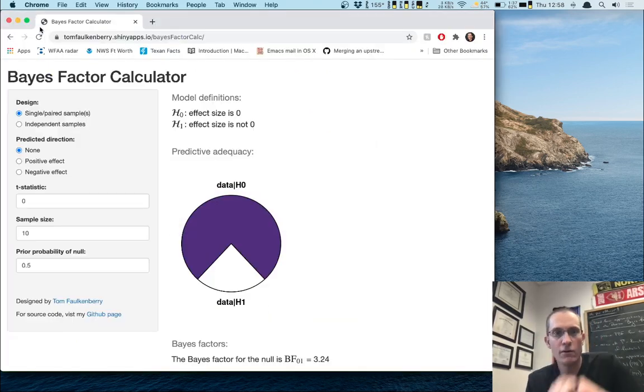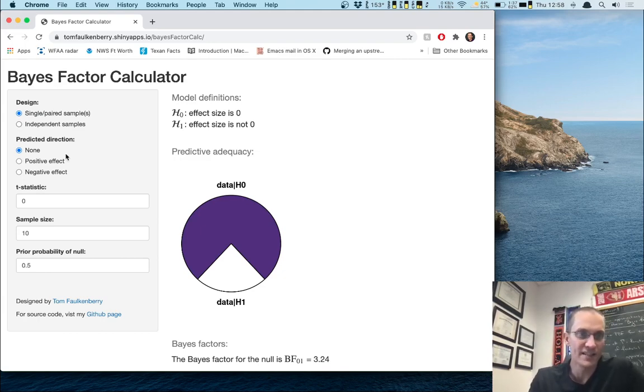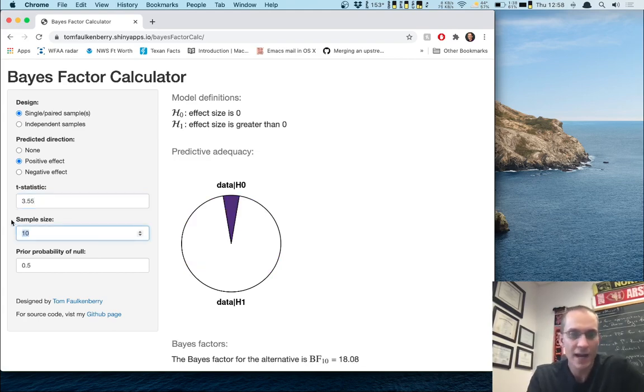So I'm going to pop over to a browser where I've got the Bayes factor calculator opened up. So this looks a lot like our p value calculator from the last lecture. So over on the left are some things that we can put in about the data. We can talk about design. We can talk about direction. We can put in the t statistic, the sample size, all kinds of things. Let's see what we got. This is a single sample design, so we'll leave that checked. Predicted direction was that we would have a positive effect. That's because our h1 was defined as delta bigger than zero. In fact, you can see up here it automatically updates my model definitions so that I can make sure I've got the correct ones. The t statistic, that's the thing that we just figured out. That was 3.55 and the sample size was 65.